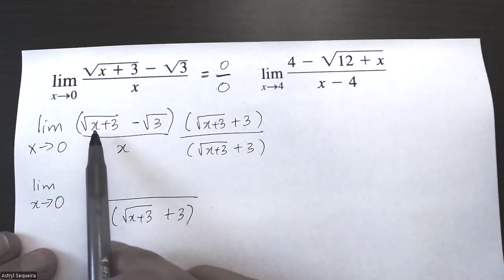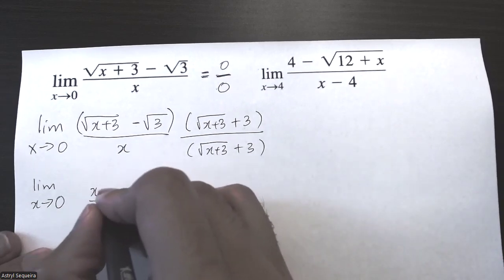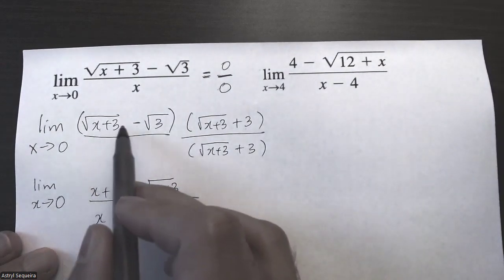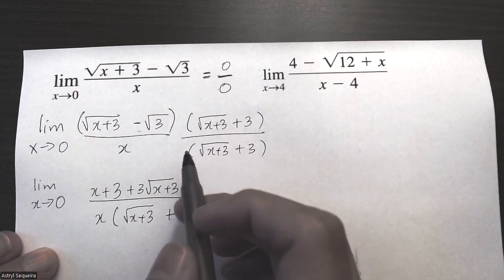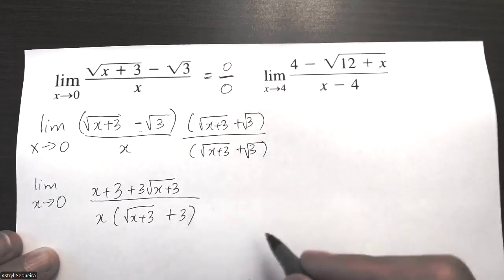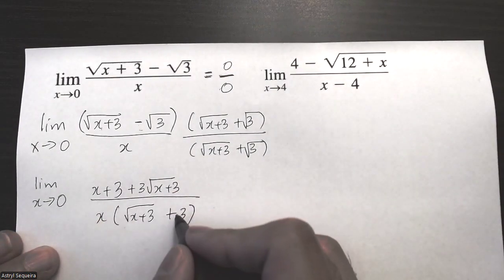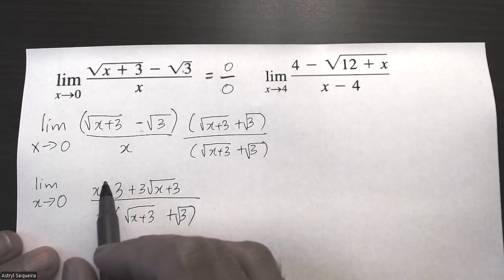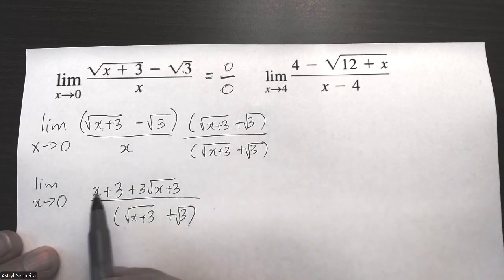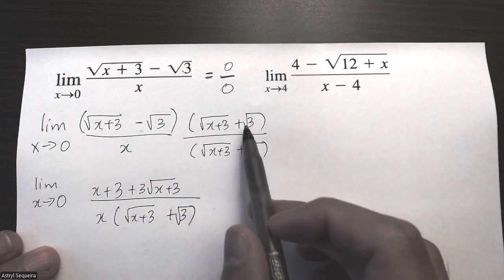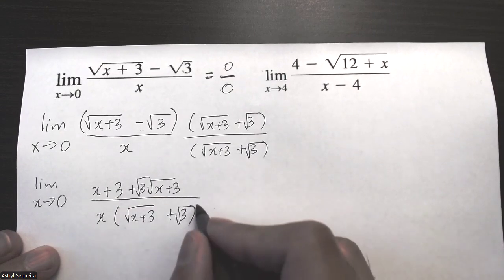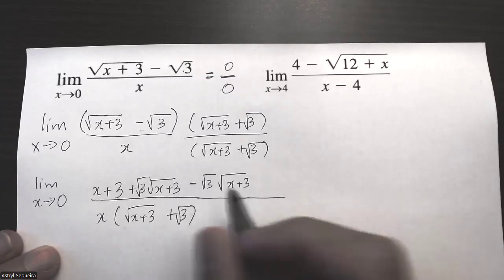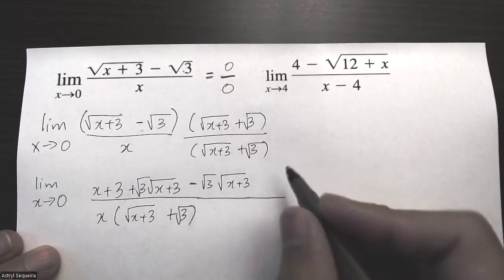For the top I will expand: root x plus three times root x plus three is just x plus three. Then root x plus three times root three is plus root three times root x plus three. I'm missing a root here — just realized there's a root there, and a root over here as well because it was in the question and I forgot to put it in the first step. So continuing: x plus three, then root x plus three times root x plus three is x plus three, root three times root x plus three, and then multiplying the two insides gives negative root three times root x plus three.